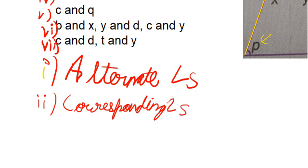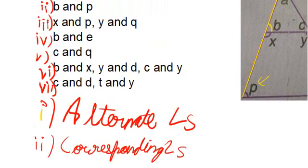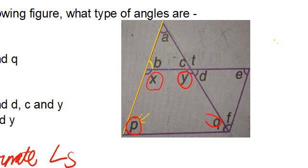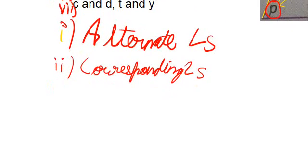For part three, angles X and P, and Y and Q: these four angles — X, P, Y, and Q — lie on the same side of their respective transversals and are both interior, so they are co-interior angles.